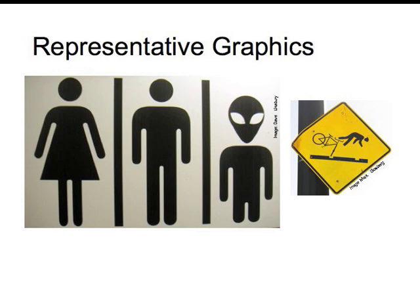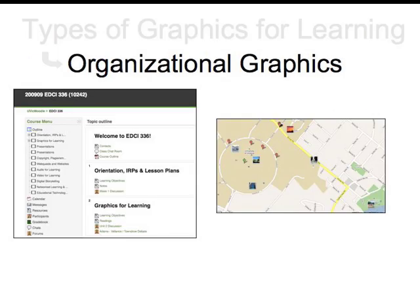Representative graphics convey information with a combination of words and shapes. They may be culturally specific, so take care that they are used appropriately. Organizational graphics convey structure, sequence, hierarchy, or spatial relationship. These include organized textual graphics like a table of contents.